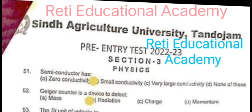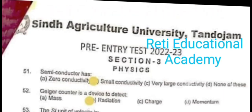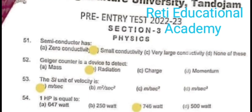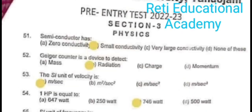Welcome back to Rethi Educational Academy YouTube channel. This is the third part of the pre-entry test 2022-23 for Sindh Agricultural University Tandojam. In this video, I will share about Physics. In the previous two videos, I had shared about Biology Section 1 and Chemistry Section 2. Question 51: Semiconductor has small conductivity. Question 52: Geiger counter is a device used to detect radiation. Question 53: The SI unit of velocity is meter per second. Question 54: 1 HP is equal to 746 Watts.